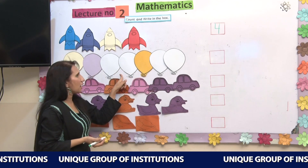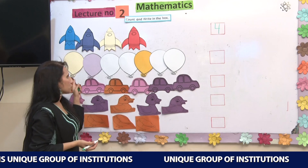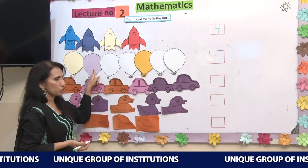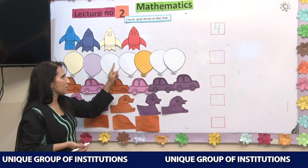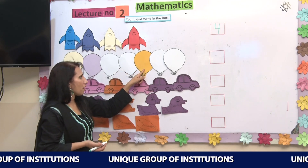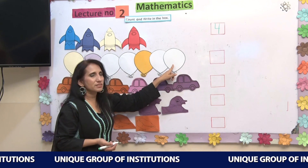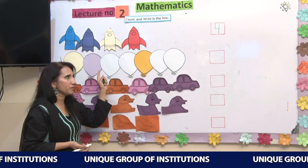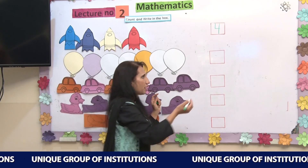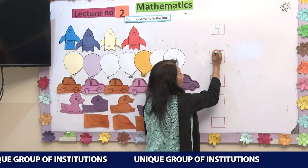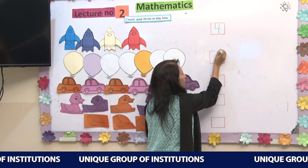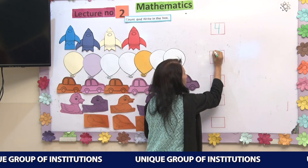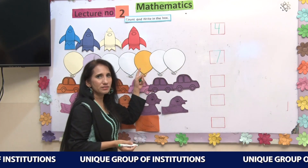What are these? These are some balloons. Let's count together: 1, 2, 3, 4, 5, 6, 7. There are 7 balloons. In this box I will write number 7, because there are 7 balloons.